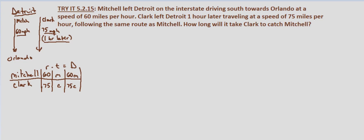Mitchell's rate is 60 miles per hour. We'll define M as Mitchell's time and C as Clark's time — using the first letters of their names. So Mitchell's rate is 60 mph, his time is M, and distance equals rate times time, which is 60M. Clark's rate is 75 miles per hour, his time is C, so distance equals 75C.